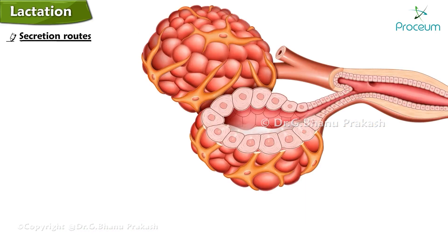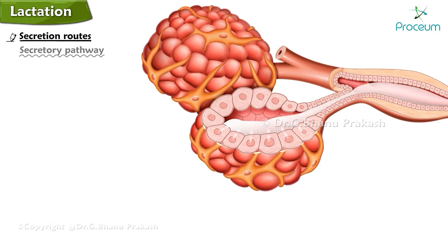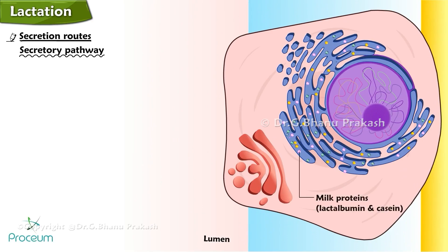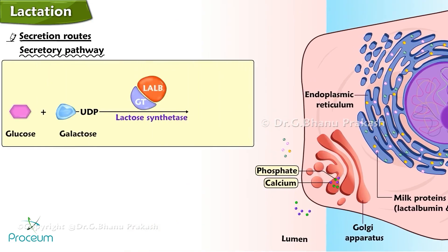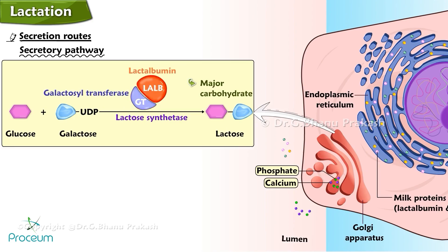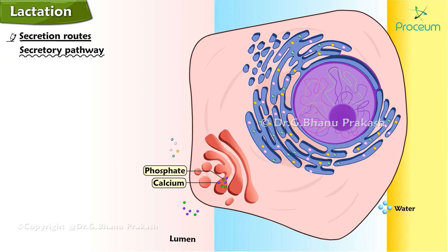Secretion of the complex mixture of constituents that make up milk is carried out by five major routes. In the secretory pathway, milk proteins lactalbumin and casein are synthesized in the endoplasmic reticulum and sorted to the Golgi apparatus, where alveolar cells add calcium and phosphate to the lumen. Lactose synthetase in the lumen of the Golgi catalyzes the synthesis of lactose, the major carbohydrate. Lactose synthetase has two components: a galactosyl transferase and lactalbumin, both made in the endoplasmic reticulum.